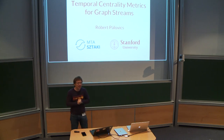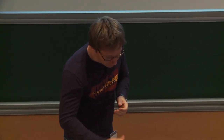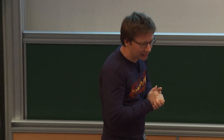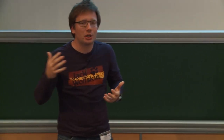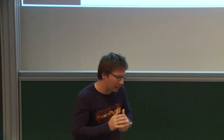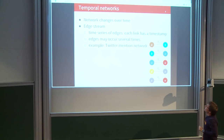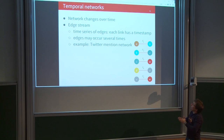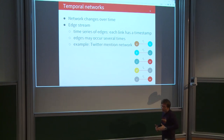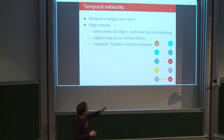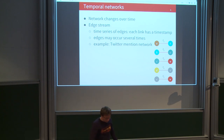The topic of this talk is strongly connected to the previous one. We are interested in temporal networks where the network changes over time. In datasets this can be captured as a time series of edges, where each link has a timestamp. A general example is how people mention each other on Twitter, for example around a certain topic or event.